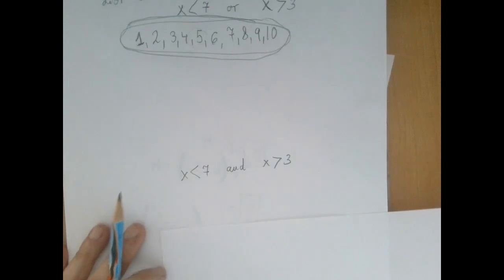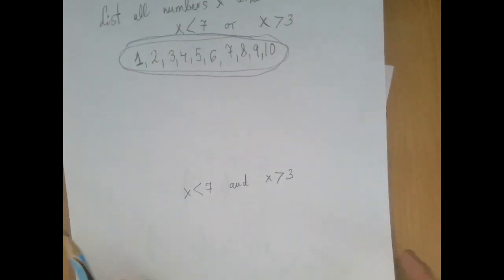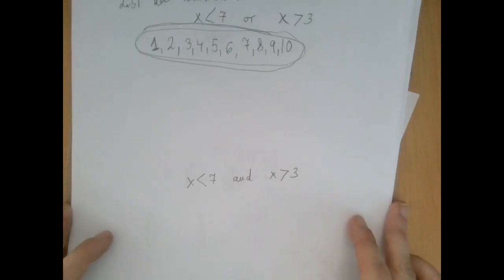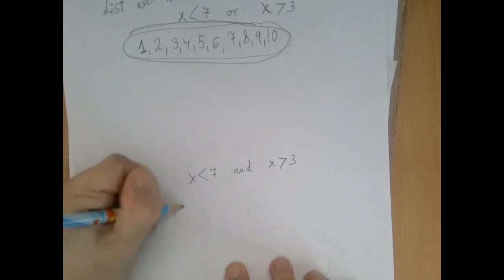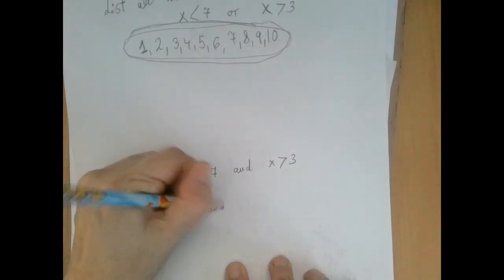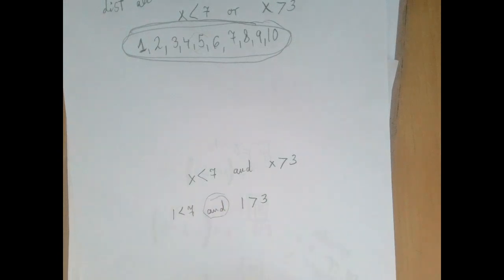Now let's see the second part. So the second part demands that we find the numbers from 1 to 10 that are less than 7 and greater than 3. So let's start with x equals 1. So 1 is less than 7 and 1 is greater than 3. Now because the word is and, they both have to be true.